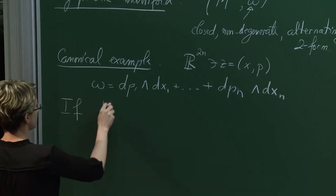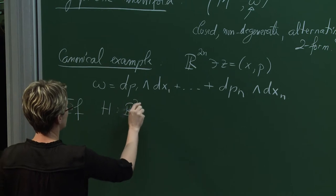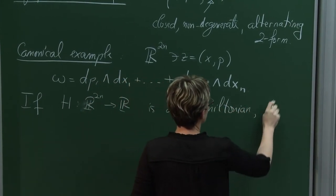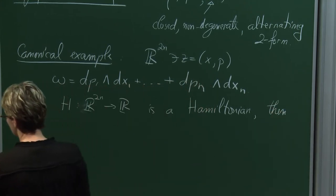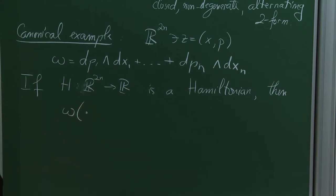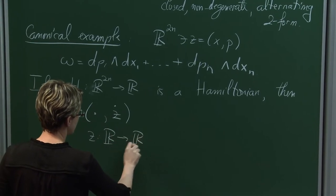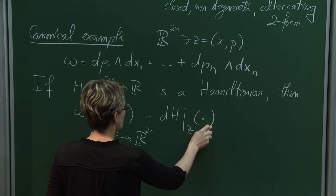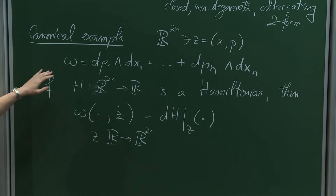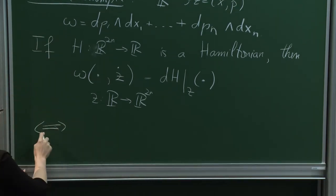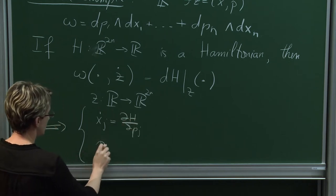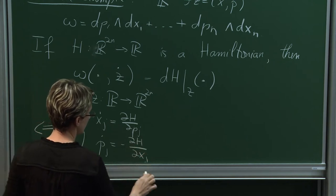This symplectic form is the one responsible for Hamilton's equations in their traditional form. If H is a Hamiltonian from R^{2n} to R, the flow generated by this Hamiltonian is defined by ω(ż, ·) = dH(z). Decoding this using the definition of ω, you recover exactly Hamilton's equations: ẋ_j = ∂H/∂p_j and ṗ_j = -∂H/∂x_j.